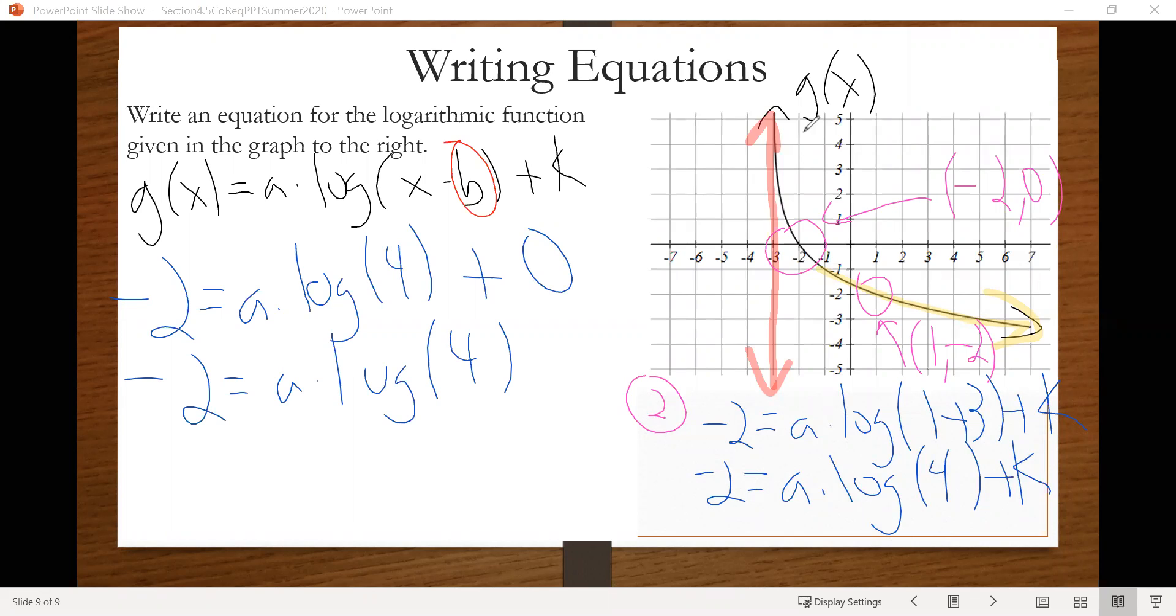We can solve for a there by dividing by log of 4 on both sides. Okay. When we do that, we'll get a equals negative 2 over log of 4. Plug that into our calculator. And that will give us negative 3.322. And I apologize, kind of ran out of room there.